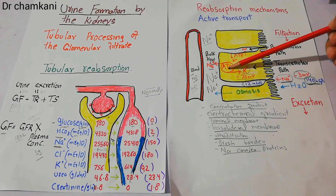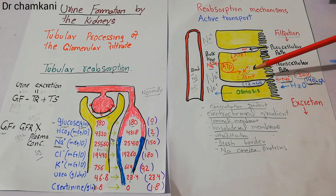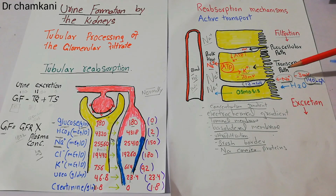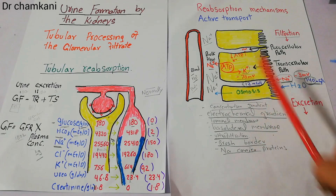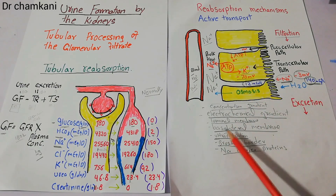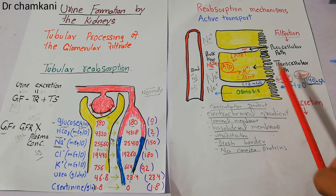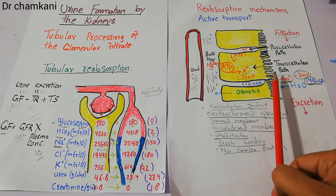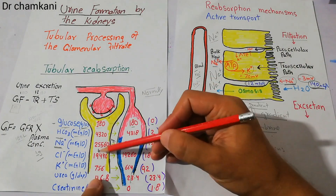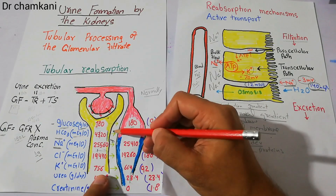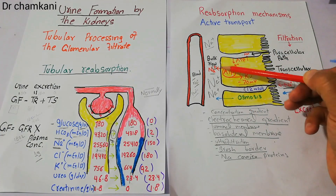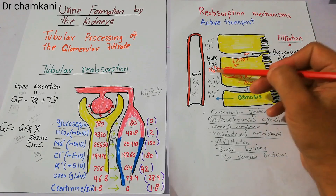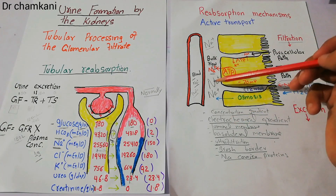Along this concentration gradient, with the help of sodium carrier proteins, sodium moves passively from the tubular lumen into the cells. When sodium-potassium ATPase throws out sodium, it also throws out positive charge, so the charge inside the cell decreases to minus 70 mV while the charge in the tubular lumen is minus 3 mV. There is therefore movement of sodium along the electrochemical gradient as well. The brush border is the extension of the luminal membrane on which sodium carrier proteins are present, favoring passive movement of sodium into the cells. Movement from cells into the interstitium is via ATPase along the basolateral membrane. Once sodium accumulates in the interstitium, it moves from there into the blood.